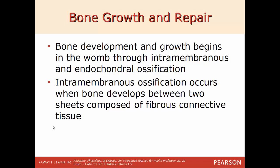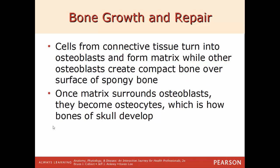Bone growth and development begins within the womb through a process called intramembranous and endochondral ossification. Intramembranous ossification happens when a bone develops between two sheets of connective tissue. This is how the bones of the skull form — which is why a newborn has that soft spot, the fontanelle, on top of the head, because that space has not been covered with bone yet. The cells from this connective tissue turn into osteoblasts and lay down their matrix of calcium and phosphorus, filling in the gaps and creating compact bone over a surface of spongy bone.